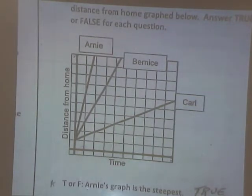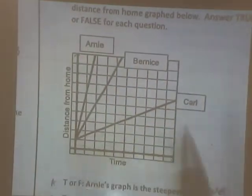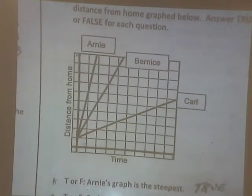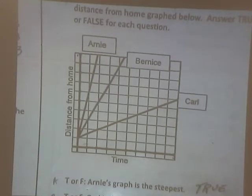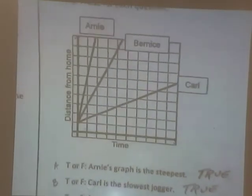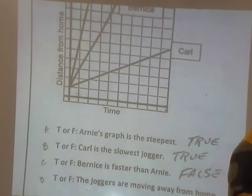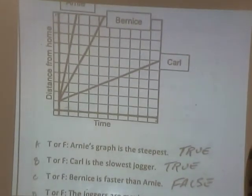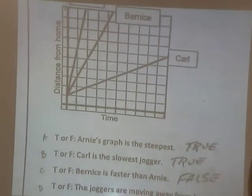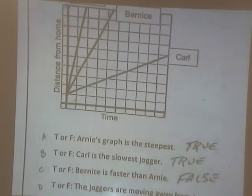Bernice is faster than Arnie. False. False. They ran the same distance, but it took her longer. And the joggers are moving away from home. True. True. Any questions on 6 through 10? Okay.